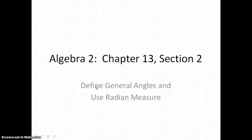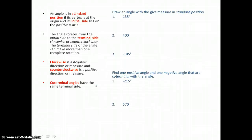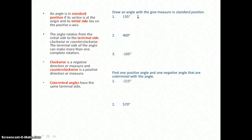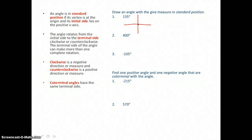In Lesson 13.2, you will define general angles and use radian measure. First we're going to draw an angle with the given measure in standard position. To do that, we draw the angle on the coordinate plane, and the initial side of the angle is on the positive x-axis.